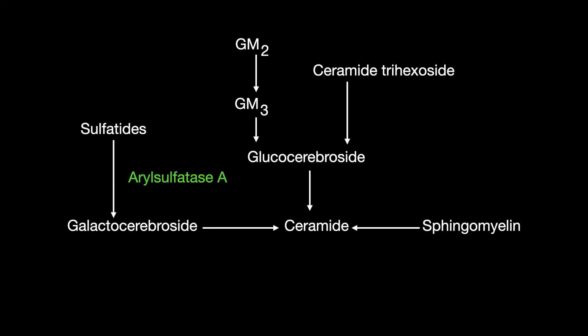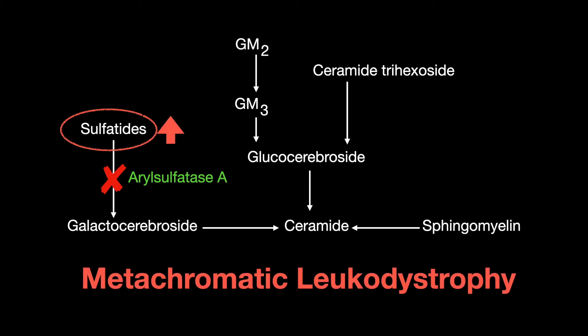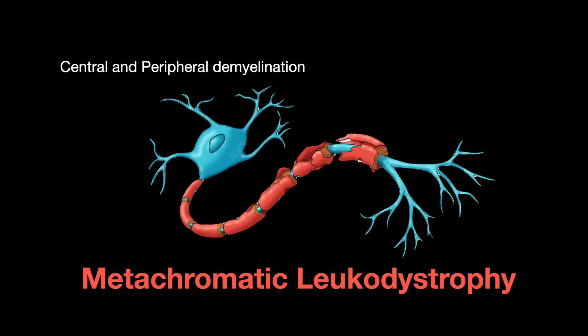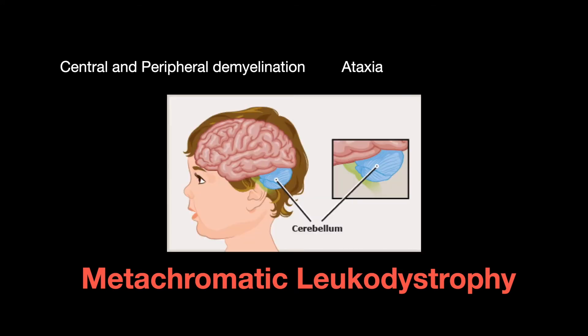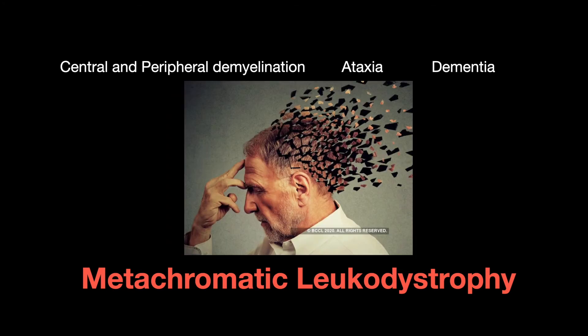Arylsulfatase A catalyzes sulfatide to galactocerebroside. A deficiency of this enzyme results in the buildup of sulfatide, causing metachromatic leukodystrophy, which is characterized by central and peripheral nervous system demyelination, ataxia, and dementia.